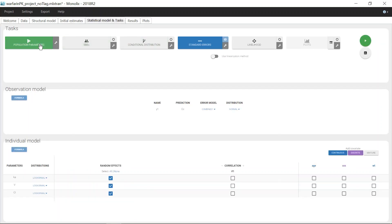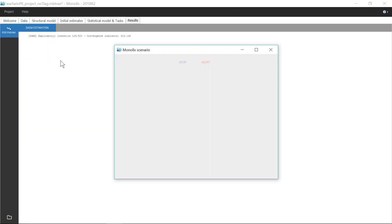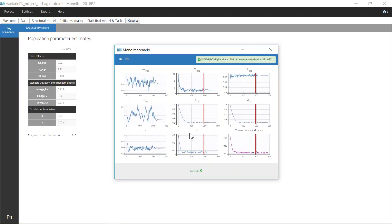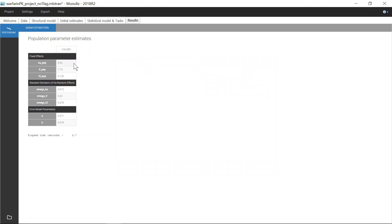After running the population parameter estimation with SAEM, I can see that the estimated value for Ka-pop is now closer to 1.